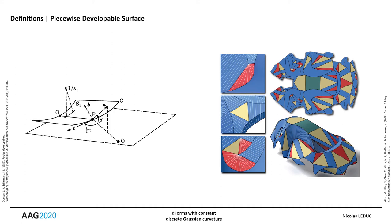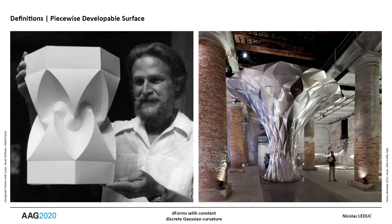Kilian and Aliyee, on the other hand, rely on discrete differential geometry. Curved folding has been implemented at several scales, from artistic works to architecture and industrial design.